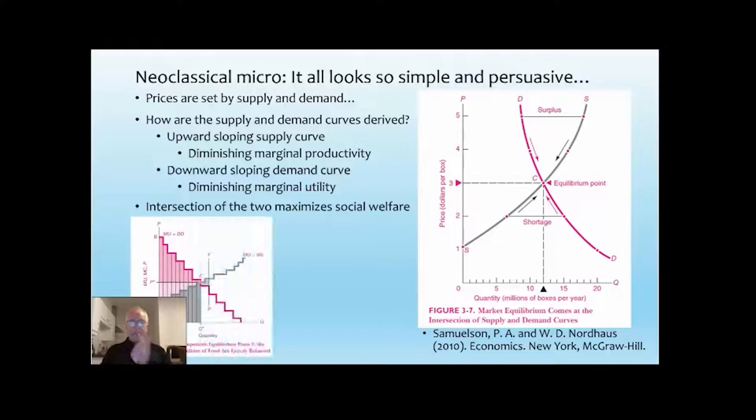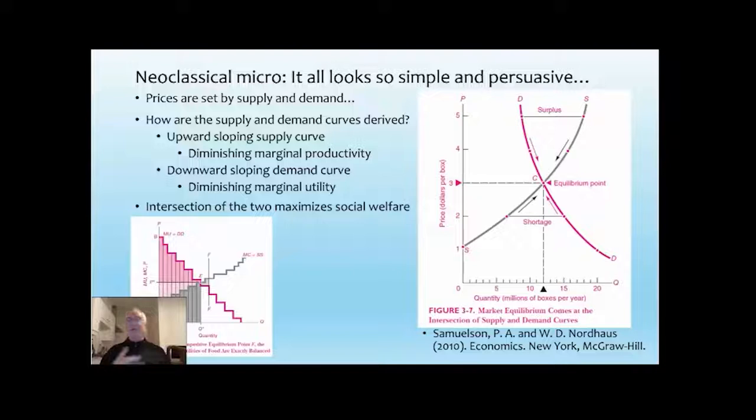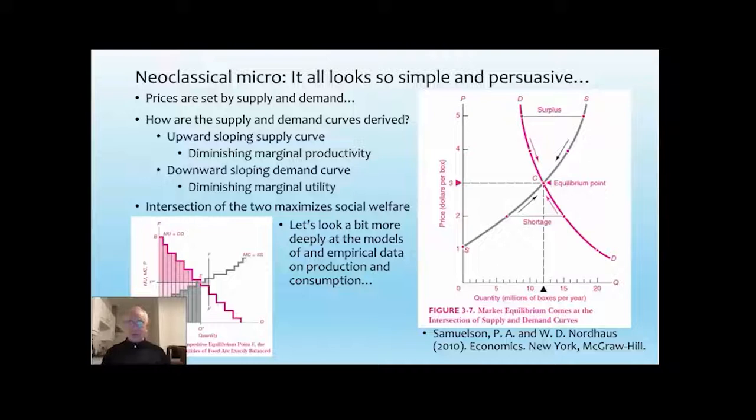Here's another drawing, again with made-up data by Samuelson and Nordhaus, showing that the competitive equilibrium point only applies if markets are competitive. By competitive, they mean that individual suppliers can supply as much as they like at the market price — anything they add to supply does not change the market price. Let's take a look at the empirical data on production and consumption and see how well the theory stacks up against the empirical data.